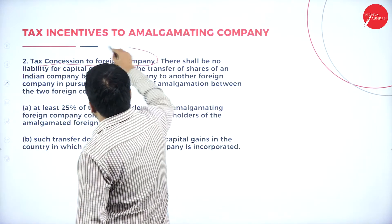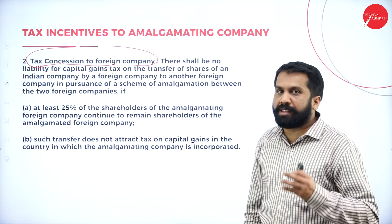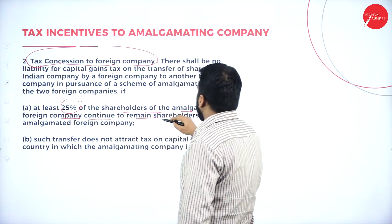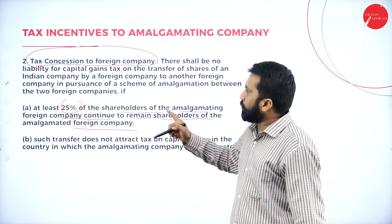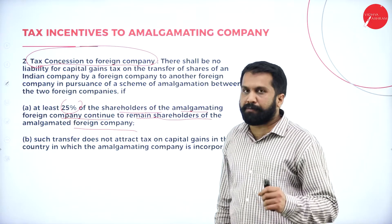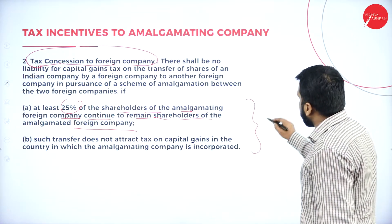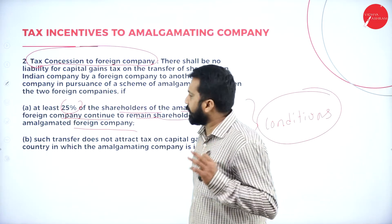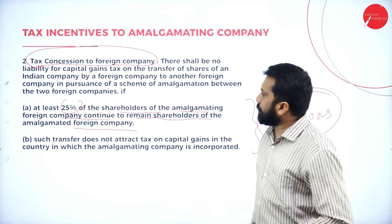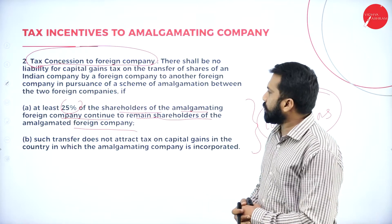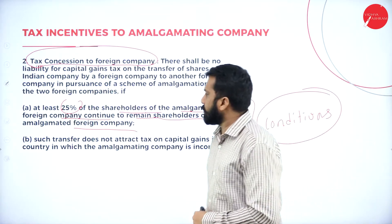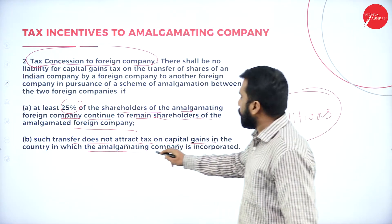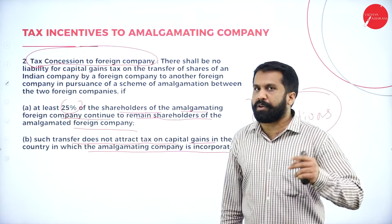Second, tax concession to a foreign company. If it is a foreign company, they will get concession, but conditions apply. Condition one: at least twenty-five percent of the shareholders of the amalgamating foreign company must continue to remain shareholders of the amalgamated foreign company. Condition two: such transfer does not attract tax on capital gain in the country in which the amalgamating company is incorporated.